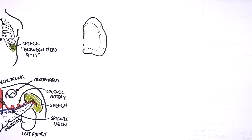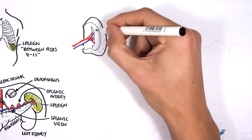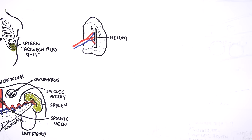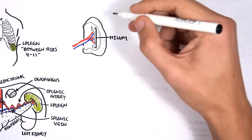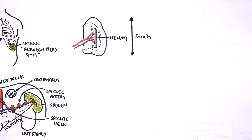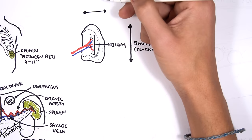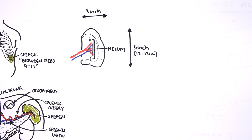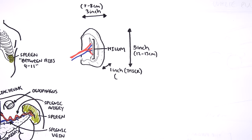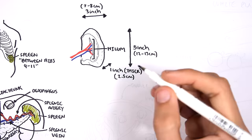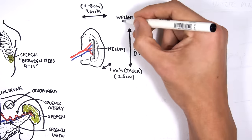Where the vessels go in and out of the spleen is the hilum of the spleen. The dimensions of the spleen: it is about 5 inches high, which is about 12 to 13 cm. The spleen is about 3 inches in width, which is about 7 to 8 cm. The thickness is about 1 inch, which is about 2.5 cm. The spleen weighs about 7 ounces, which is about 200 grams.